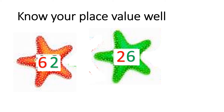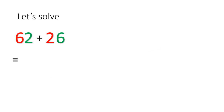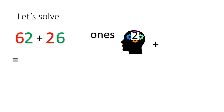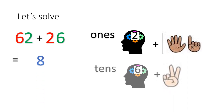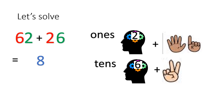Now let's try some more. What's the number in the red star? It's 62. What's the number in the green star? It's 26. Place value for red star: 6 is 10s and 2 is 1s. Let's solve 62 plus 26. Look at the 1s — put 2 in your head and 6 on your fingers, and count the number after 2: 3, 4, 5, 6, 7, 8. Write 8. Now look at the 10s: put 6 in your head and 2 on your fingers. What's the number after 6? 7, 8. So write another 8. The answer is 88.